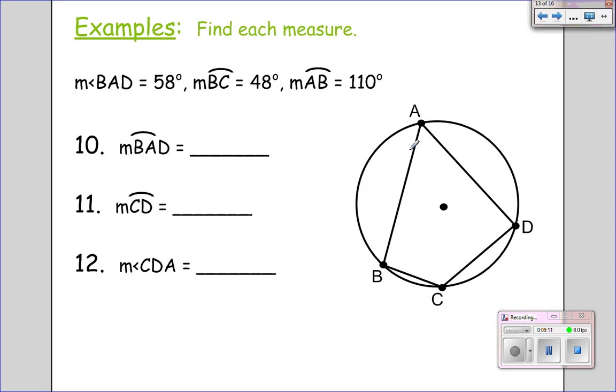Angle BAD is 58 degrees. Arc BC down here is 48 degrees. And arc AB is 110 degrees. Well, based on my knowledge about quadrilaterals in a circle, angle A and C have to add up to 180. So that makes this 122 degrees.